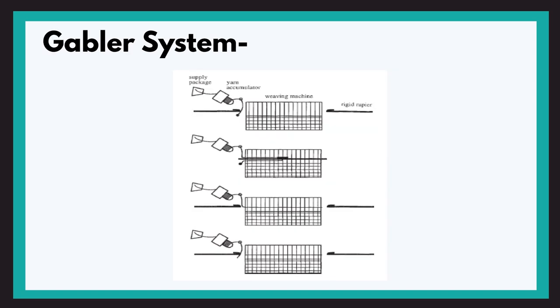Whereas, in the Gabler system of weft transfer, the yarn is not gripped. The giver takes the yarn in form of a u-shaped loop to the center of the machine, just like as shown in the second stage of the diagram. And then, the taker extends the yarn to the other side of the machine. And this is how the weft is transferred.